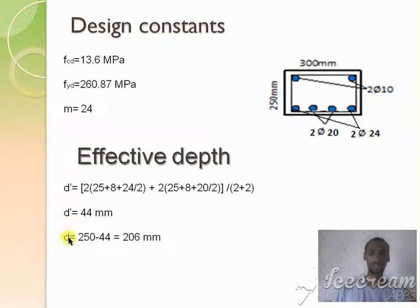Once we know d prime, we can calculate effective depth. That is total depth minus the d prime. So it will be 206mm.